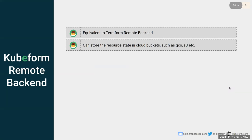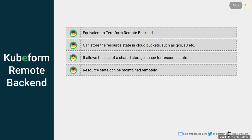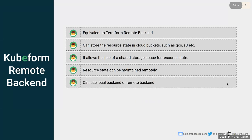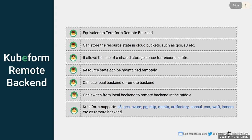Using a remote backend, we can store the resource state in cloud buckets and use it from that stored location. Remote backends allow use of a shared storage space for resource state — multiple users can use the same resource. The resource state can now be maintained remotely in a remote bucket like Google Cloud Storage, Amazon S3, and many more. KubeForm supports almost all the top cloud providers' buckets as a remote backend: S3, GCS, Azure, PostgreSQL, and many more.